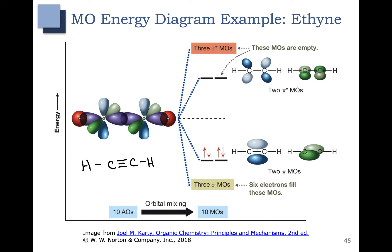The atomic orbitals include the two s orbitals from hydrogen, the four sp hybrid orbitals from the carbons, and then the four p orbitals. We have ten electrons in our system: six electrons fill the sigma bonding molecular orbitals, and four electrons fill the pi bonding molecular orbitals. These are equal in energy and they are the highest, so we actually have two HOMOs.